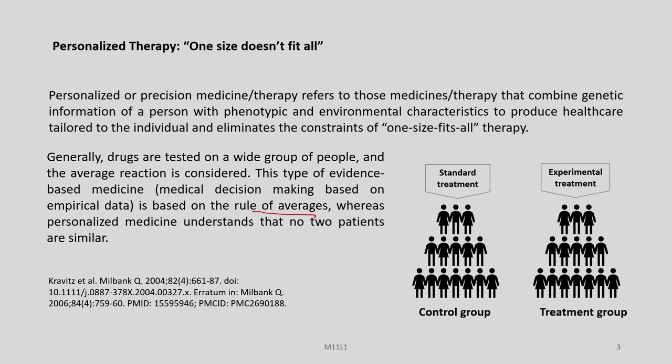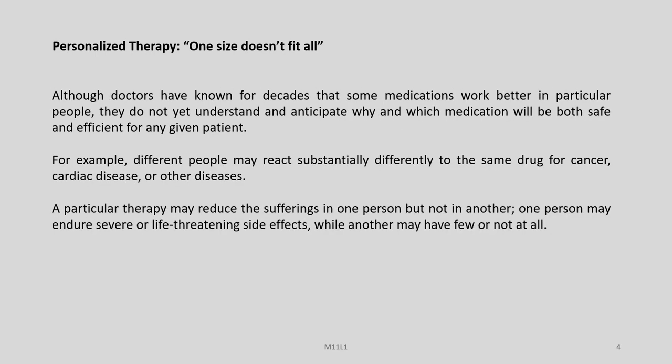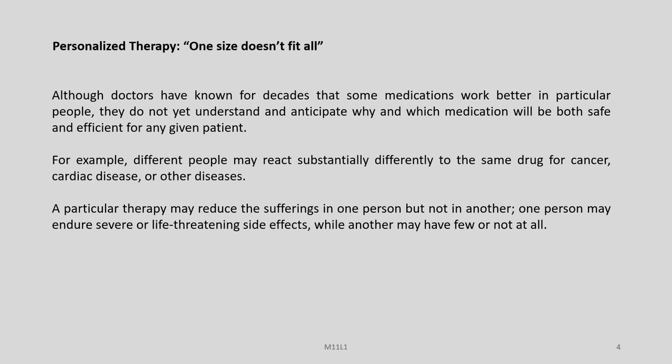Personalized medicine understands that no two patients are similar. Although doctors have known for decades that some medications work better in particular people, they do not yet understand and anticipate why and which medication will be both safe and efficient for any given patient. For example, different people may react substantially differently to the same drug for cancer, cardiac diseases, or other diseases. A particular therapy may reduce the sufferings in one person but not in another, and one person may endure severe or life-threatening side effects while another may have few or no reactions at all. One of the key causes of this disparity is that people inherit different gene variants or alleles — a little variation of which can cause significant impact on how the body reacts to a specific treatment.